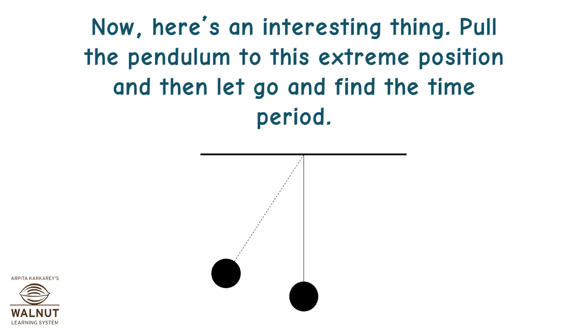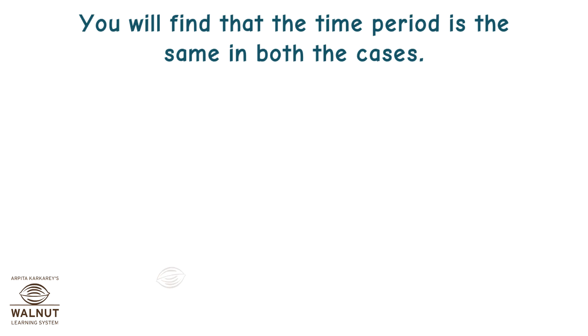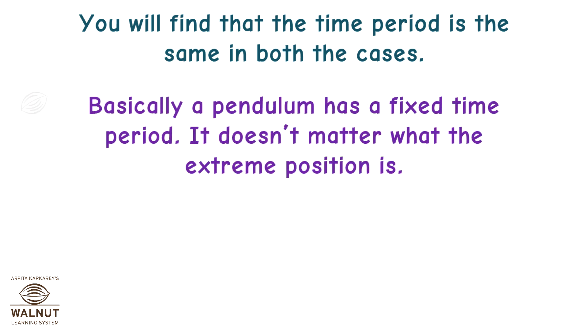Now, there's an interesting thing. Pull the pendulum to this extreme position and then let go and find the time period. Now pull the pendulum to this extreme position and then let go and find the time period. You will find that the time period is the same in both cases. Basically, a pendulum has a fixed time period. It doesn't matter what the extreme position is.